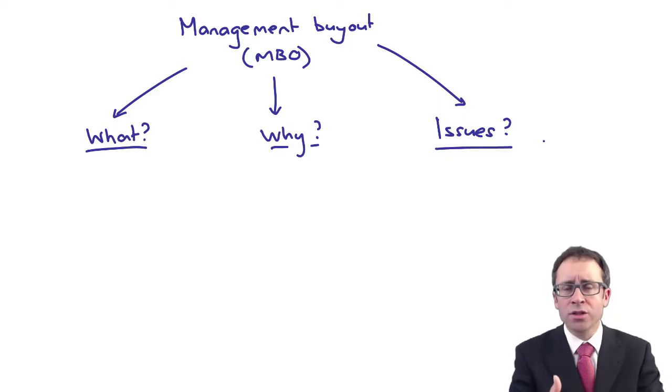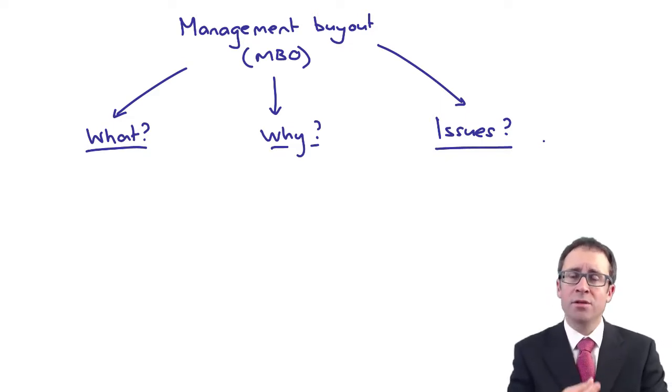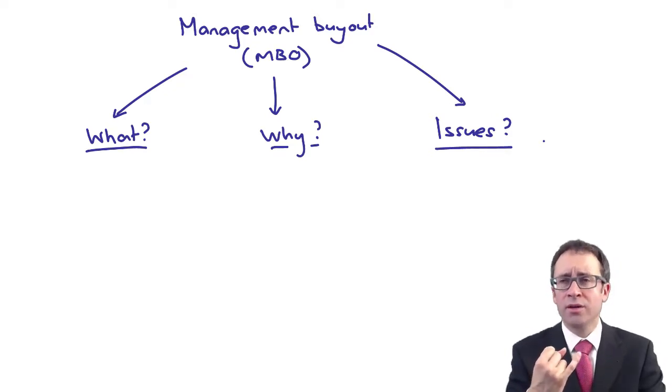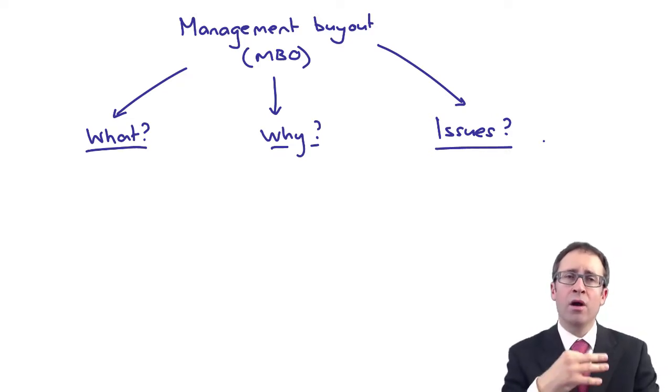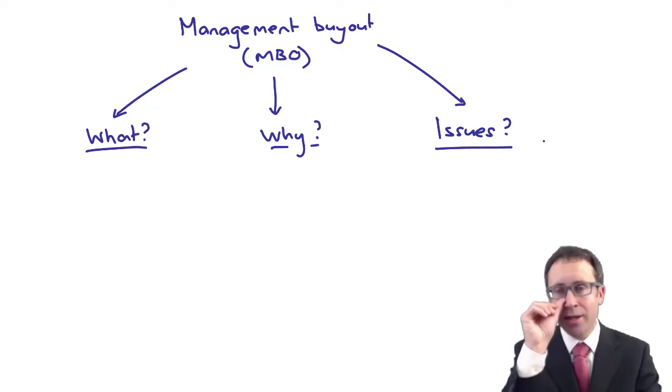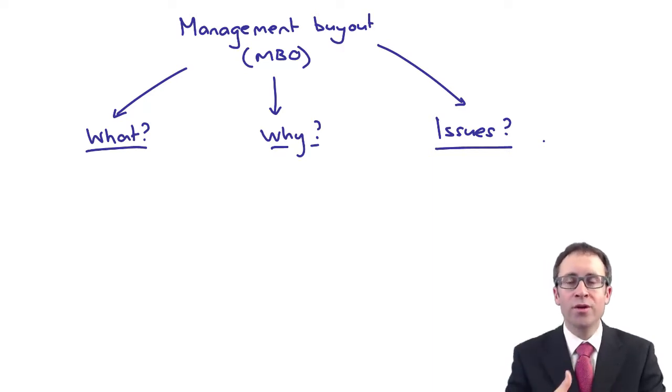Hopefully what will happen overall is that once the business has been separated out, it will improve and value will be created. Therefore, even though it's very costly for management to buy out the business - they will need all sorts of finance, not just their own personal finance, but also from banks and venture capitalists - it's very expensive and there will be a lot of restrictions in terms of covenants on the loans. It will be a challenge to manage. But as you go forward, you will be able to increase the value of the business and grow it yet further to the point where it will be an attractive target for another predator company at some point in the future.